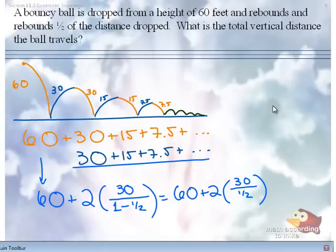So 30 over one-half is 60. Two times 60 is 120. 60 plus 120 is 180, and this is in feet. That works.